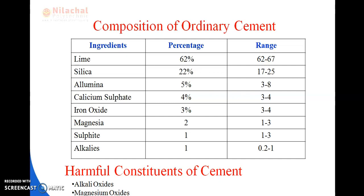Next, the compositions of ordinary cement — the ingredients present in cement are: lime, silica, alumina, calcium sulfate, iron oxide, magnesia, sulfide, and alkalis. Lime contains 62% with a range of 62–67%. Silica contains 22% with a range of 17–25%. Alumina contains 5% with a range of 3–8%. Calcium sulfate is 4% with a range of 3–4%. Iron oxide is 3% with a range of 3–4%. Magnesia is 2% with a range of 1–3%.